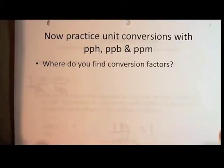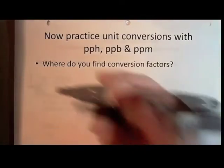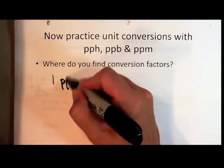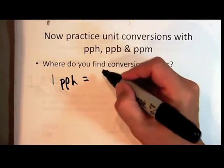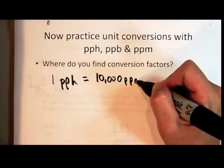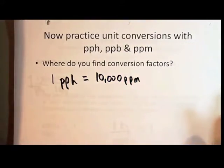We can define these numbers in a similar way. For example, one part per 100 equals ten thousand parts per million. Now within the metric system, you have to memorize that a kilo is equal to a thousand or ten to the third. But in this case we already know what a hundred is - it's one zero zero. We already know what a million is - it's one zero zero zero zero zero zero. So we know the definitions of what those words mean.